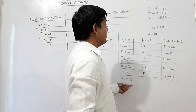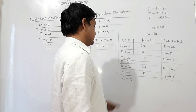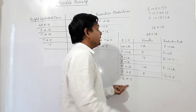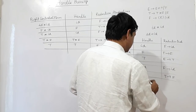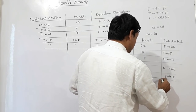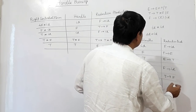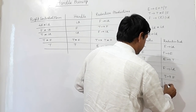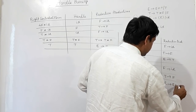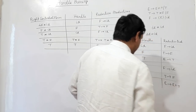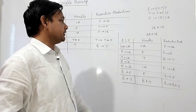Now with E plus T, E plus T as a whole can be the handle here, because E plus T can be reduced to E. So I am taking E plus T as handle, and using the production E produces E plus T. This E is reduced, completing the handle pruning for id plus id.